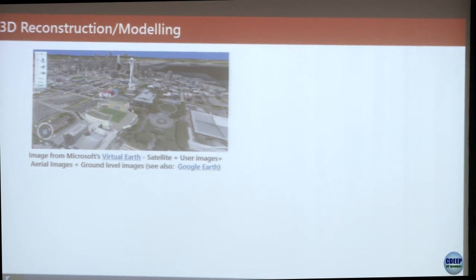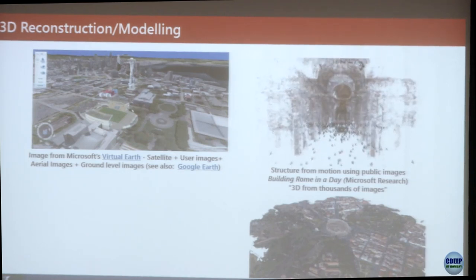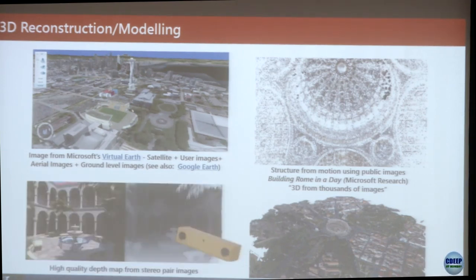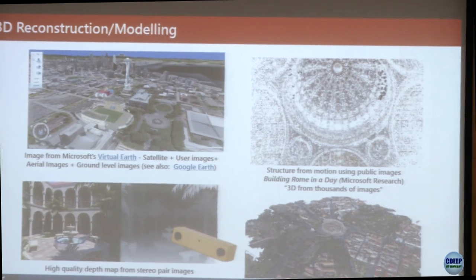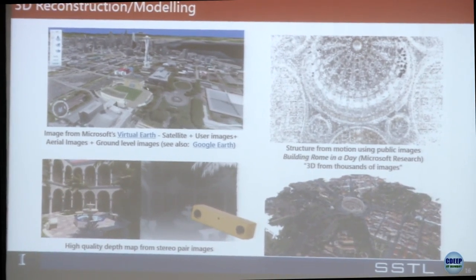For example, researchers used Microsoft Virtual Earth online images — user images, aerial images, and ground-level images — to build a 3D point cloud model of the city of Rome, including St. Peter's Cathedral, without anyone going out to take pictures. In the not-too-distant future, we're going to have 3D stereo images coming from commercial grade cameras.